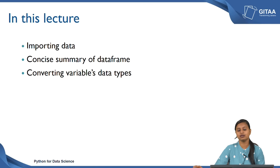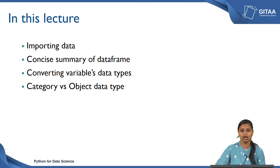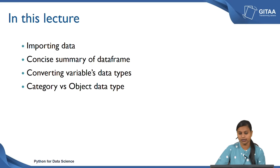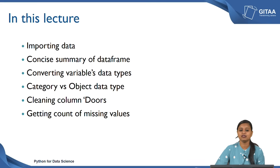After that we are going to convert the variables' data types, because in the previous lectures we encountered that some variables were not read with the correct expected data type. We are also going to look at the category versus object data type — the impact of each. Next, we are going to clean the column doors since it has a few string values, and then get the count of missing values to arrive at a solution for how to handle them.